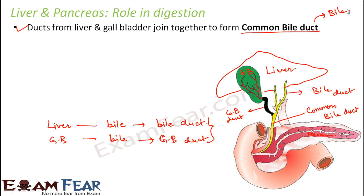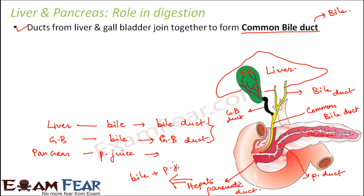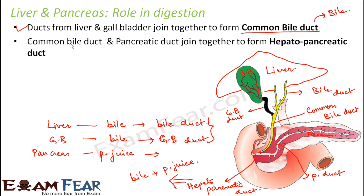The common bile duct carries bile. The exocrine part of the pancreas secretes pancreatic juice into the pancreatic duct — the tube-like structure at the center of the pancreas. The pancreatic duct then joins the common bile duct, and together they form the hepatopancreatic duct, which contains both bile and pancreatic juice.